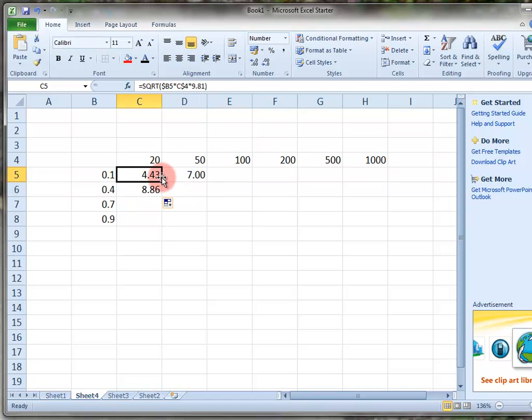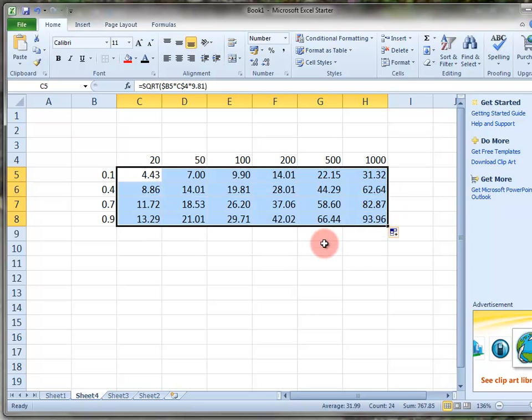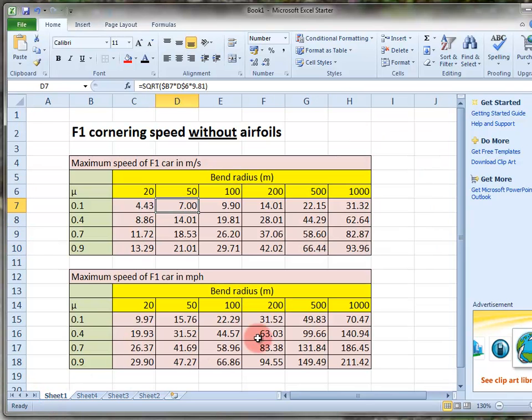If you copy this across and we copy it down, we end up with a completed table. I'll just check one at random. So 500 and 0.9 should be 66.4. 66.4 is correct.